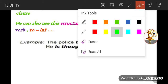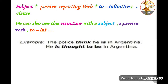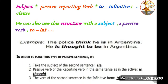So to make this type of passive sentence using a subject — the second way of reporting verbs with passive — first we take the subject from the second sentence. Then we convert the reporting verb to its passive form in the same tense as in the active sentence.